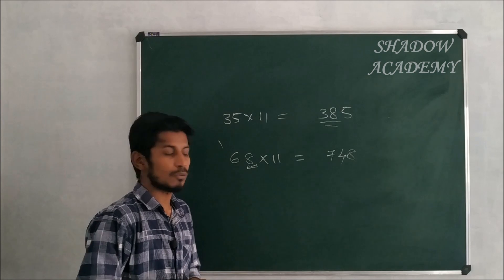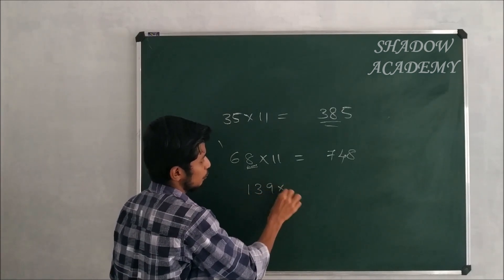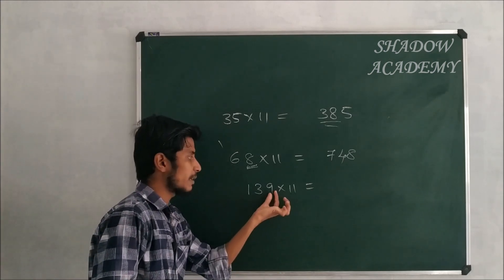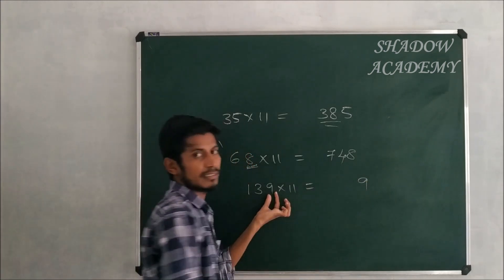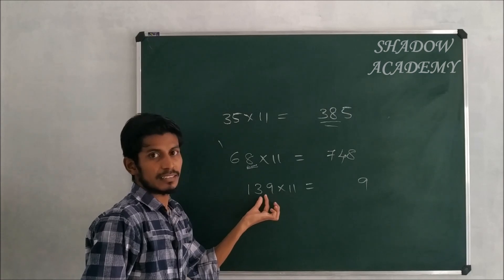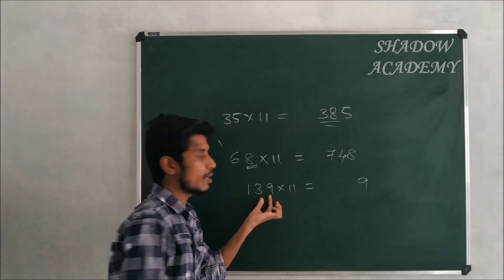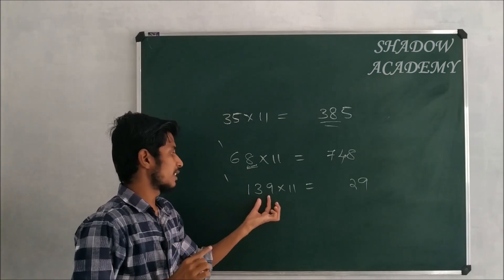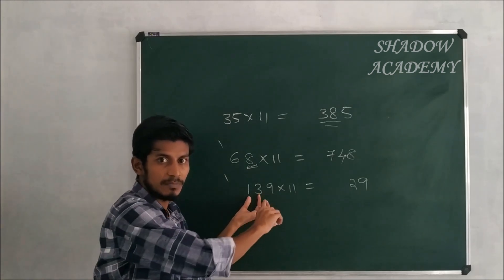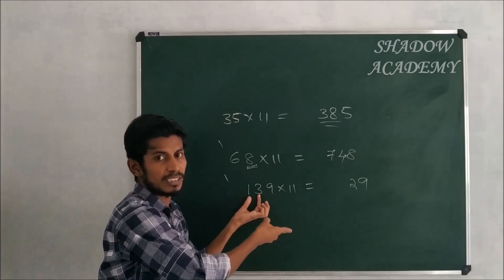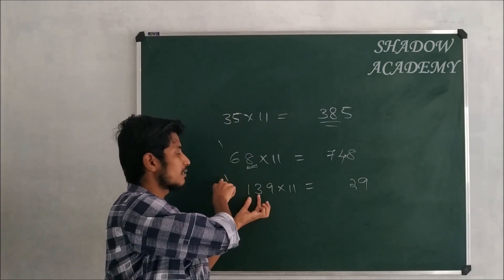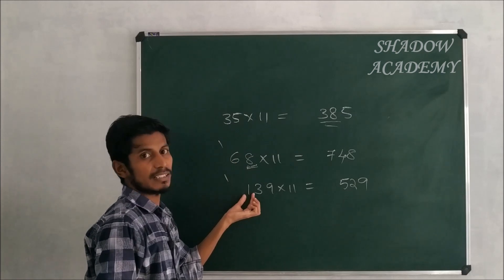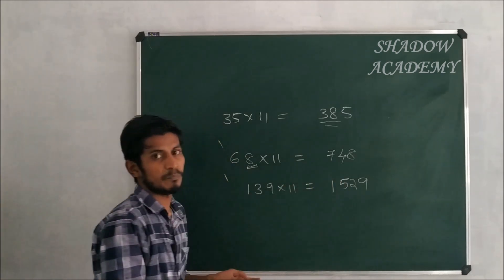For example: 139 × 11. Same procedure: write 9. Then 3 + 9 = 12, write 2 carry 1. Then 1 + 3 + carry 1 = 5. Then 1 + carry = final digit. The answer is 1529.